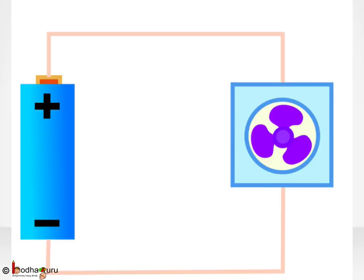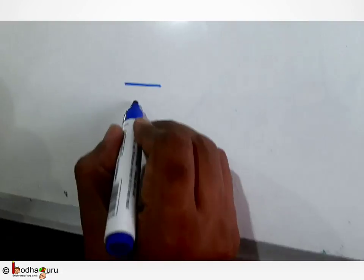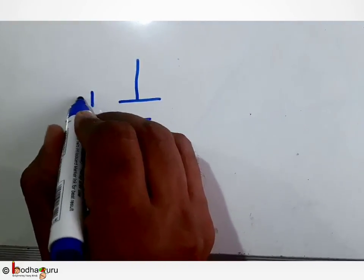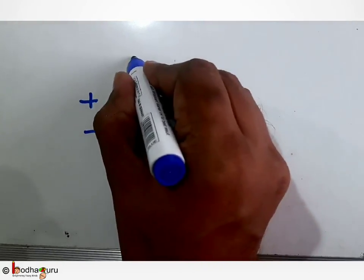Now say we connect a battery to the other ends of both the wires. We represent it in the circuit diagram in this way. This is the battery. The positive end of the battery is connected to the fan through the wire.